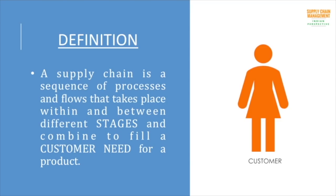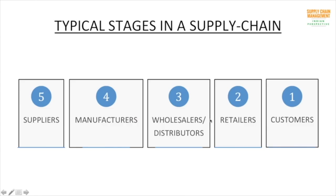In layman terms, supply chain is nothing but a chain of processes or events that happen just to fulfill a customer's need. From this definition you just need to look into two things: one is stages, and the other is the customer's need. Typically a supply chain has five stages.